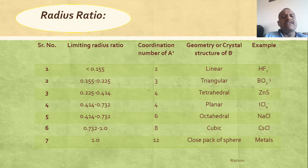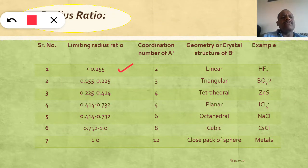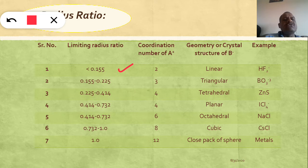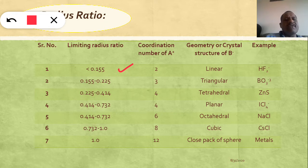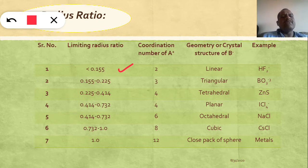If the radius ratio value is less than 0.155, the crystal lattice does not form. If it ranges from 0.1155 to 0.225, the coordination number of the cation is 2 and the geometry is linear — for example, HF2 minus. If the radius ratio ranges from 0.1155 to 0.2255, the coordination number of the cation is 3 and the crystal geometry is triangular — for example, BO3 minus.